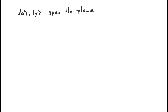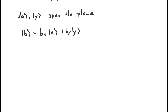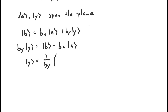Now if a and y span the plane, then we can express b as a linear combination of a and y. We repeat the same thing and replace y with b. We get b_y · y = b − b_a · a, and dividing by b_y we get y = (1/b_y)(b − b_a · a), so long as b_y is not equal to zero. Note that if b_y equals zero, our job is made much easier: b is just a scalar multiple of a, so a and b are already linearly dependent — meaning a, b, and c cannot be linearly independent.